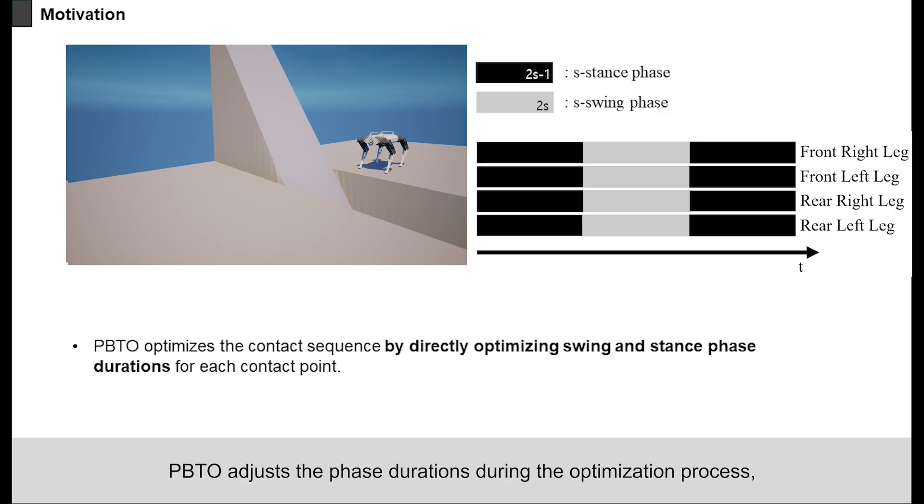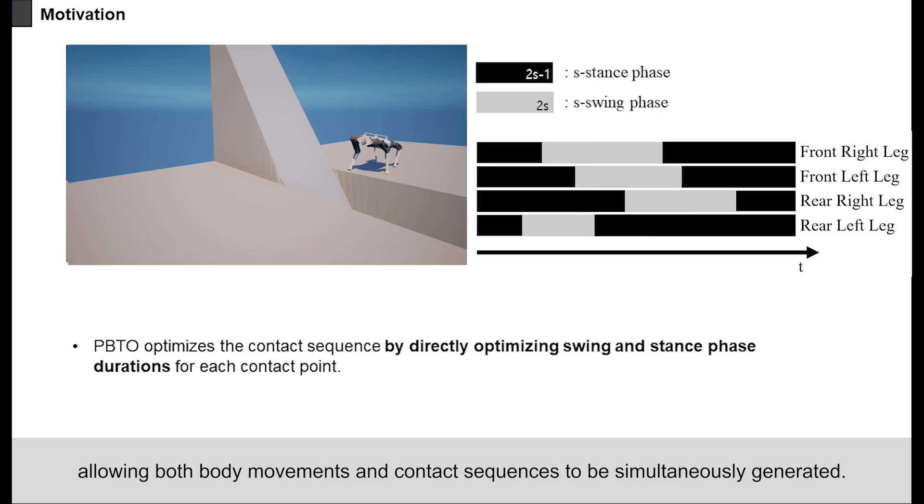PBTO adjusts the phase durations during the optimization process, allowing both body movements and contact sequences to be simultaneously generated.